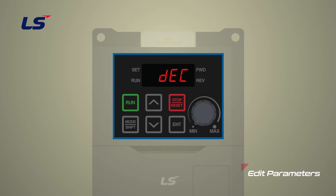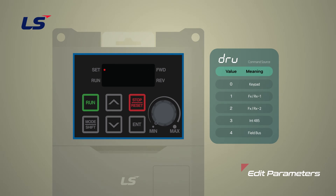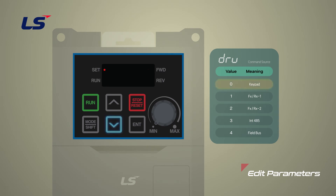Next, let's select the drive command source. Use the up and down arrow keys to move to the drive parameter. From here, press the enter key to enter the edit screen. When entering the edit screen, the previously set value blinks. Here, the meaning of numbers are shown in the table on the screen. If it is 1, it is set to FXRX1, which means the operation signal input through the multifunction digital input. In this example, we will change to 0 to operate with the keypad. Likewise, press the enter key twice to save the edited content.